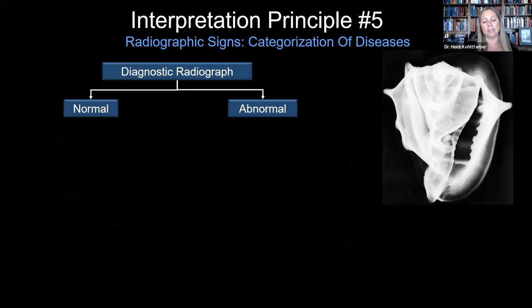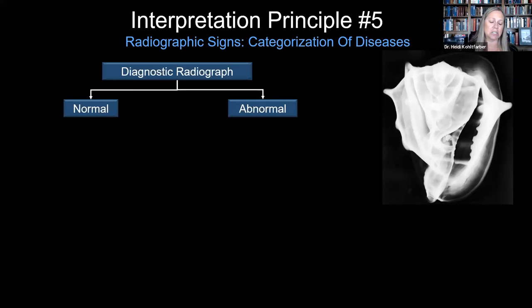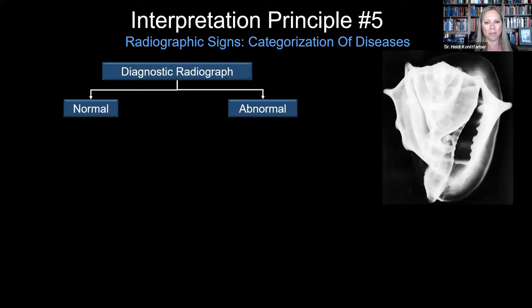When categorizing diseases, the very first thing we have to decide is whether we're looking at something normal or abnormal. Sometimes that's the hardest determination to make, and that's where knowing your normal anatomy is very helpful. When I first went back to school, I was a general dentist for six years, and the first time I looked at a CBCT, I thought I saw pathology everywhere. The chief resident said: if you think you see something, what do you think it is? If it can fit into a category, you may have a pathology. But if it doesn't fit into a category, you could just be looking at a variation of normal.